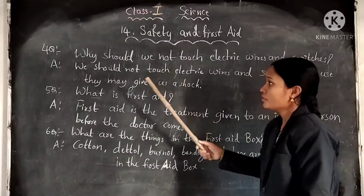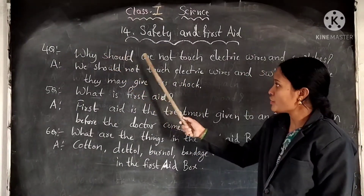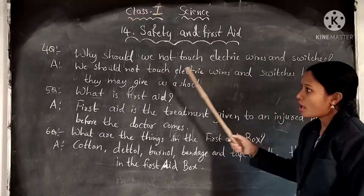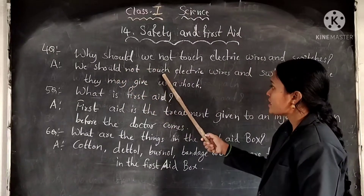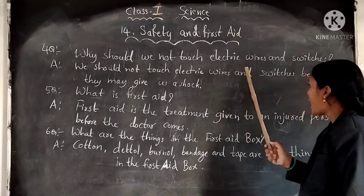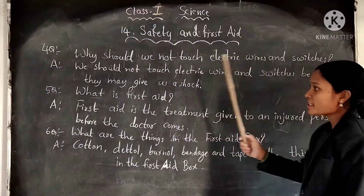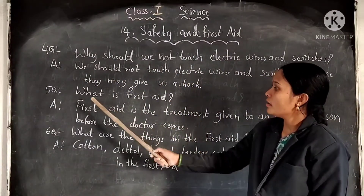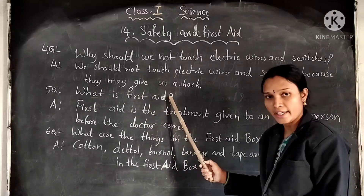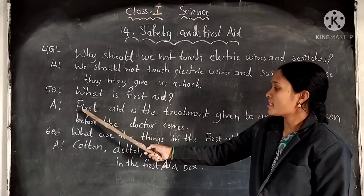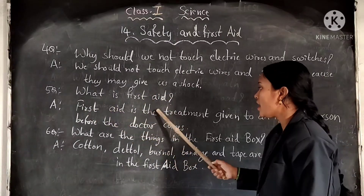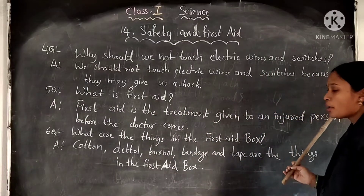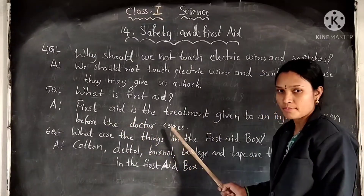Fourth question: why should we not touch electric wires and switches? Answer: we should not touch electric wires and switches because they may give us a shock. Fifth question: what is first aid? Answer: first aid is the treatment given to an injured person before the doctor comes.